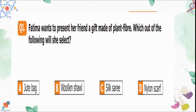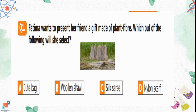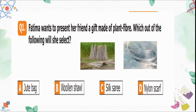Question number 1: Fatima wants to present her friend a gift made of plant fiber. Which of the following will she select? Option A is a jute bag, made of the plant jute. Option B is a woolen shawl, made of wool. Option C is a silk saree, made of silk. Option D is a nylon scarf, made of nylon. Fatima will present her friend a jute bag because it is made of plant fiber. Option A is the correct option.